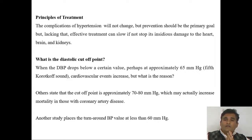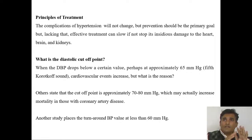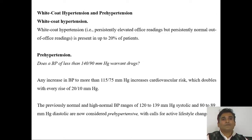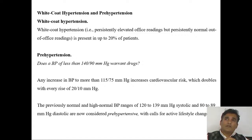It is optimal to manage diastolic blood pressure around 70 on average. White coat hypertension affects about 20 to 25% of hypertensive patients. Pre-hypertension is defined as systolic blood pressure of 120 to 139 or diastolic blood pressure of 80 to 89 at resting stage.